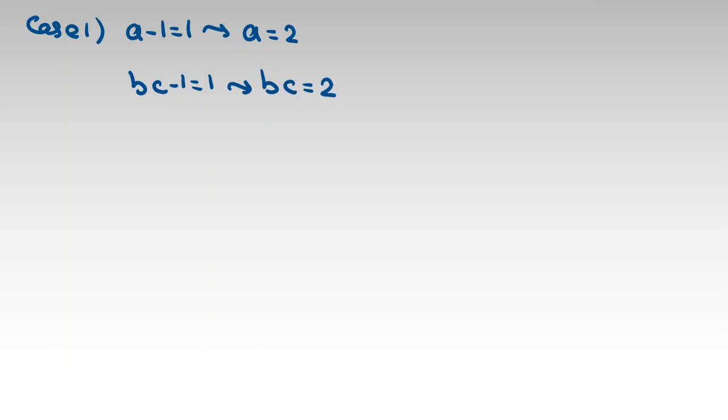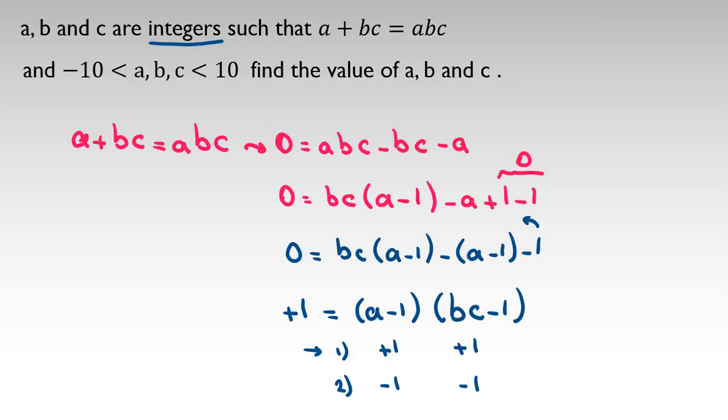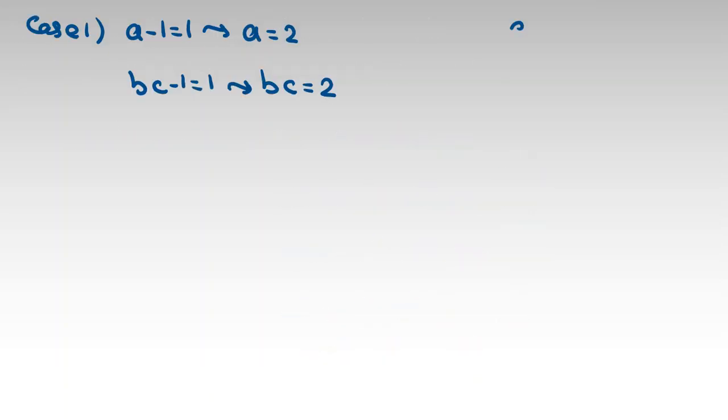Now we can verify our equation a + bc = abc. Let's check this: bc is 2, a is 2, so a is also here 2, and 2 times 2 is 4, and it's okay.